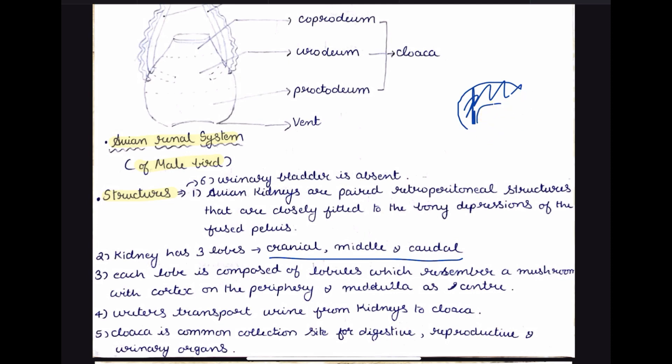The ureters transport the urine from the kidneys to the cloaca — more specifically to the urodeum part of the cloaca. The cloaca is the common collection site for the digestive, reproductive, and urinary systems. The urinary bladder is absent in birds. There are a few exceptions where a urinary bladder-like structure is present, for example the American rhea, but even in those cases a true urinary bladder is absent — it is just a dilatation of the ureter.